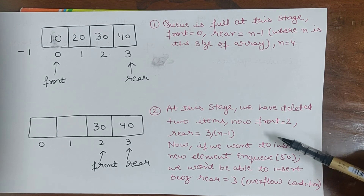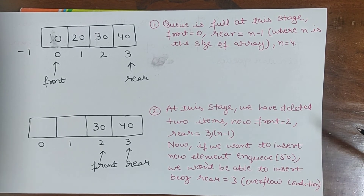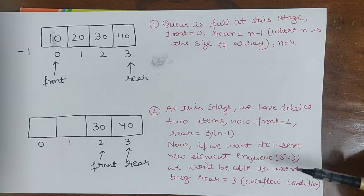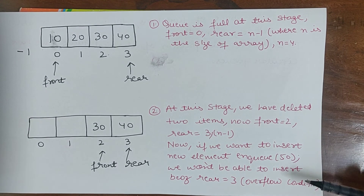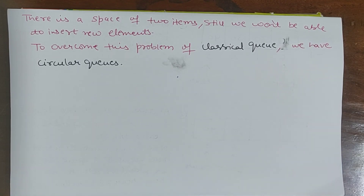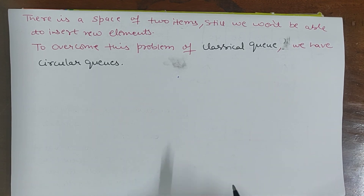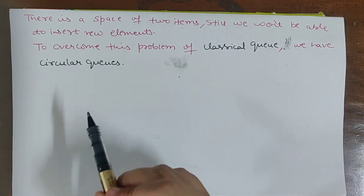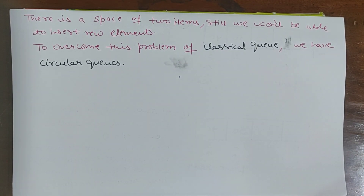At this stage front is 2 and rear is 3 which is n minus 1. If we want to insert new element 50 via enqueue, we won't be able to because rear is 3 — that is the overflow condition. There is space of two items still we won't be able to insert new elements. To overcome this problem of classical queue, we have circular queues. I will explain circular queues in my next tutorial. Thank you so much everyone.